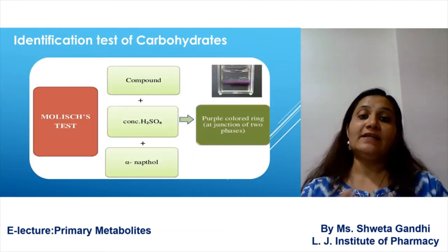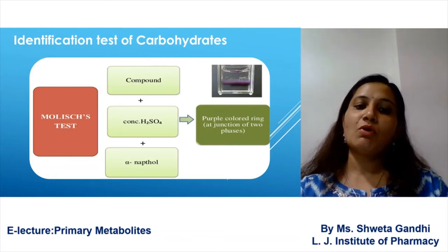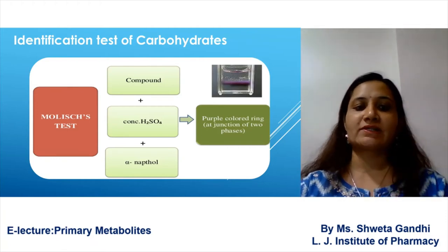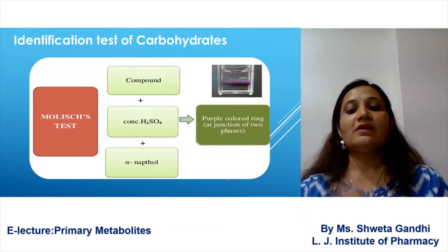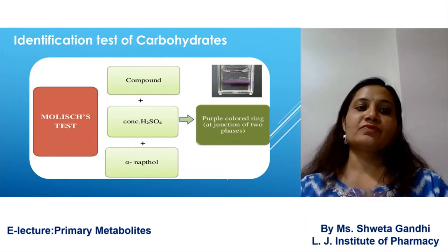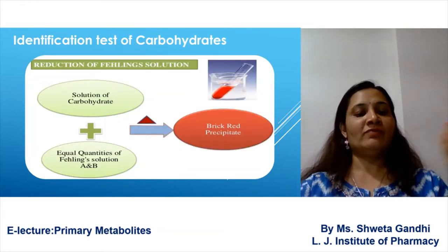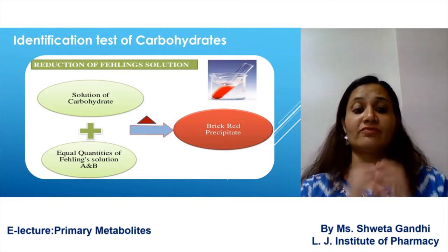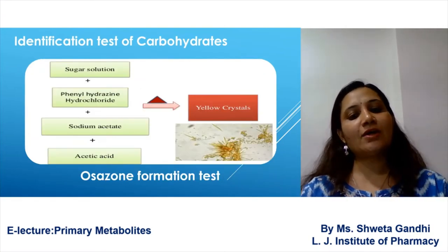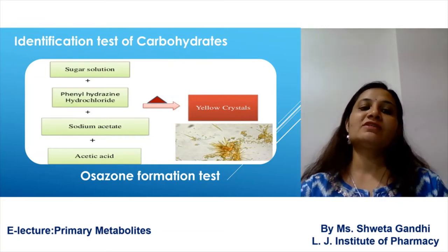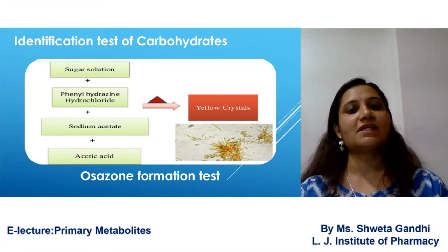For identification of carbohydrates we perform certain tests. The most important is the Molisch test: treat the sample extract with concentrated H₂SO₄ and add alpha-naphthol; at the junction a purple-colored ring forms, confirming the presence of carbohydrates. The next test is reduction of Fehling's solution: treat the sample with equal amounts of Fehling's A and B, which gives a brick-red precipitate. The osazone formation test involves treating the carbohydrate solution with phenylhydrazine and sodium acetate with acetic acid, forming yellow-colored crystals.